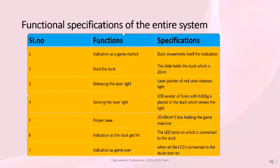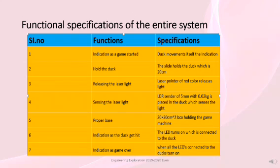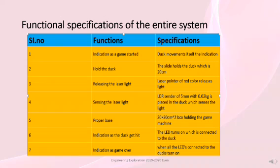For functional specifications, we identified 7 functions. First, indication that the game has started — the duck movement itself indicates this. Second, provision for holding the duck — the slider provides the space. Third, releasing the laser light — the laser pointer does this. Fourth, sensing the laser light — the LDR sensor with 5 mm diameter and 0.02 kg senses light within its range. Fifth, a proper base of 30 cm square holds the machine firmly. Sixth, indication that a duck was shot is given by an LED turning on. Seventh, when all LEDs turn on, the game is complete.